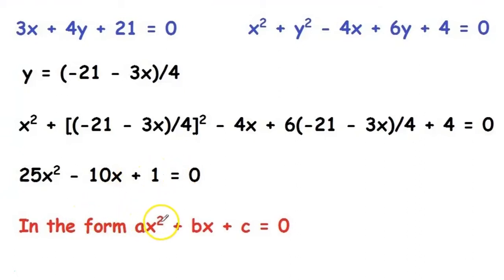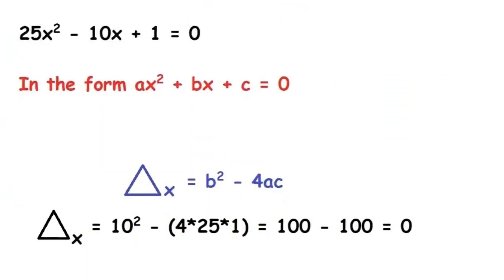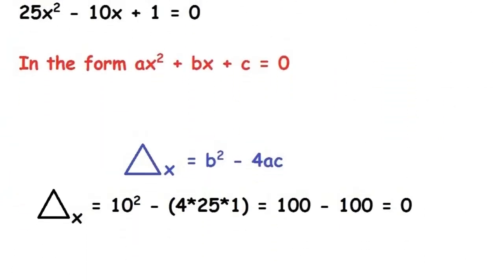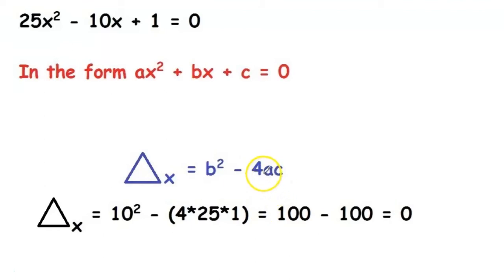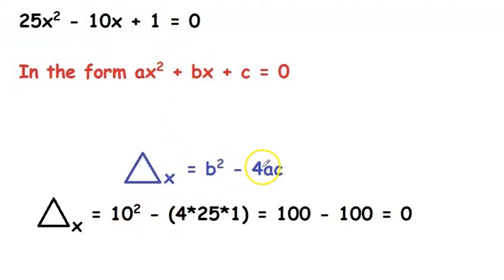This is now in the form ax² + bx + c = 0. The discriminant Δ = b² − 4ac. Here b = −10, a = 25, and c = 1. So Δ = (−10)² − 4 × 25 × 1 = 100 − 100 = 0.